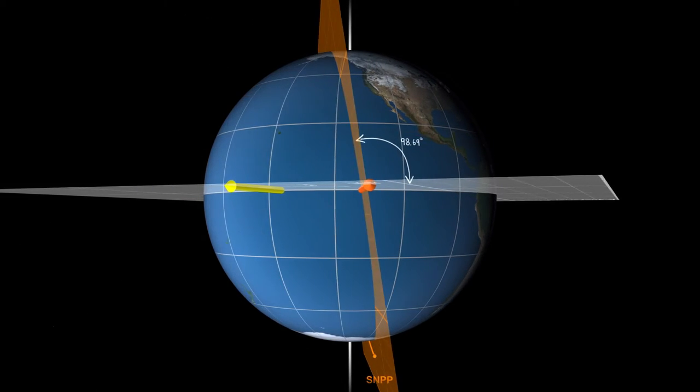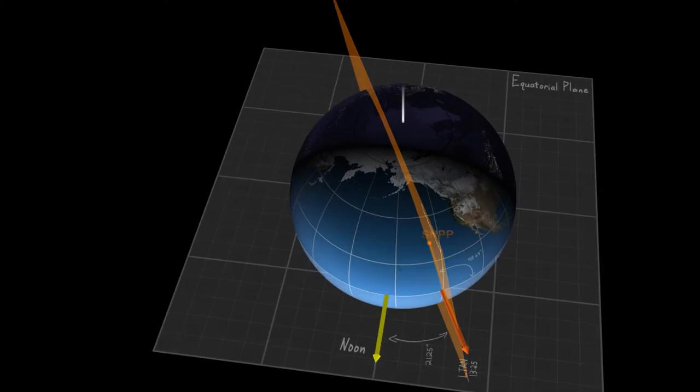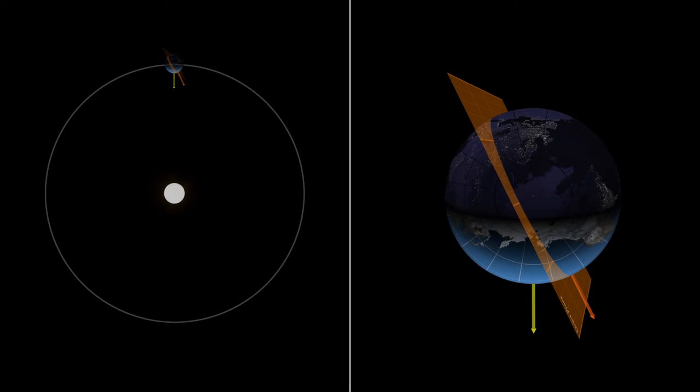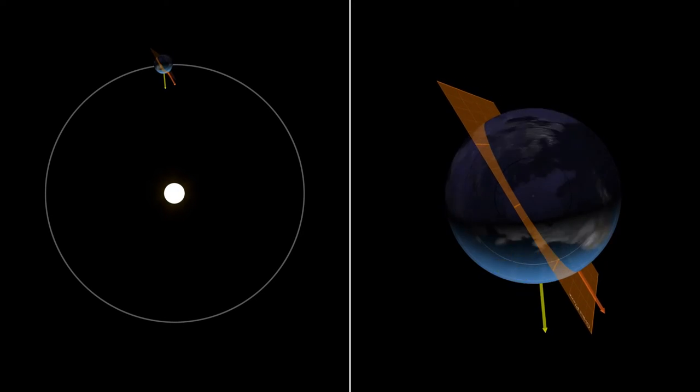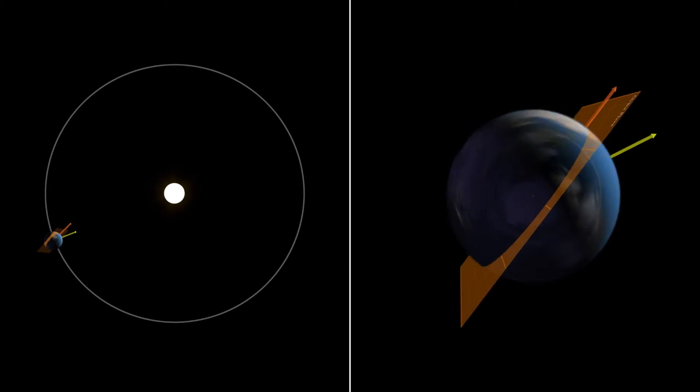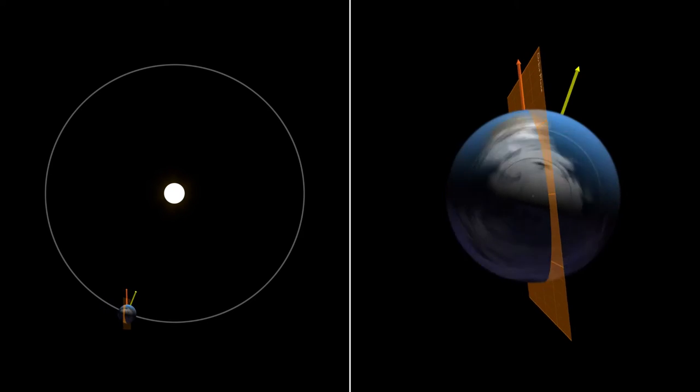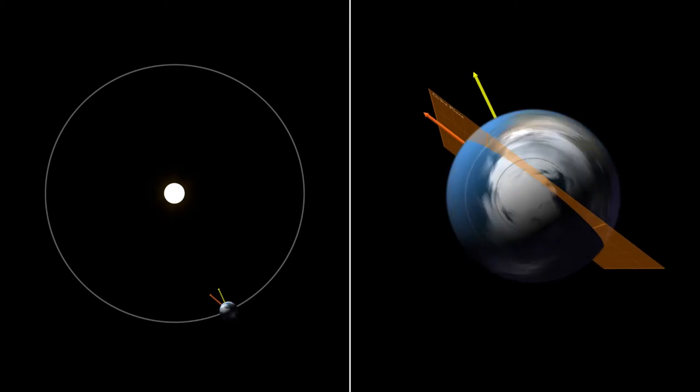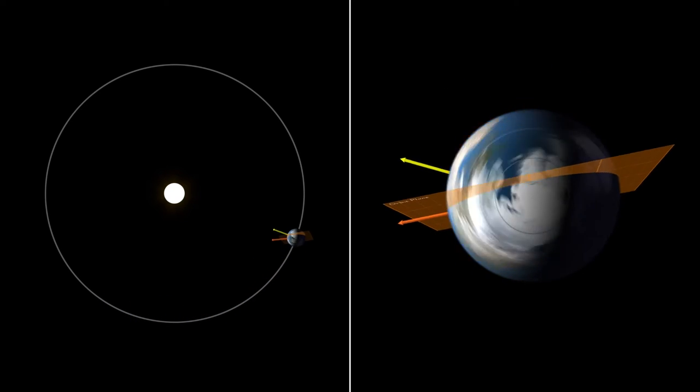Together, these fixed angles define a sun-synchronous orbit. A sun-synchronous orbit means the orbit remains fixed with respect to the direction of the sun. In this split-screen view, we speed up the Earth's rotation to show one year of the Earth's orbit around the sun, and how the JPSS orbit plane always stays oriented with respect to the sun.